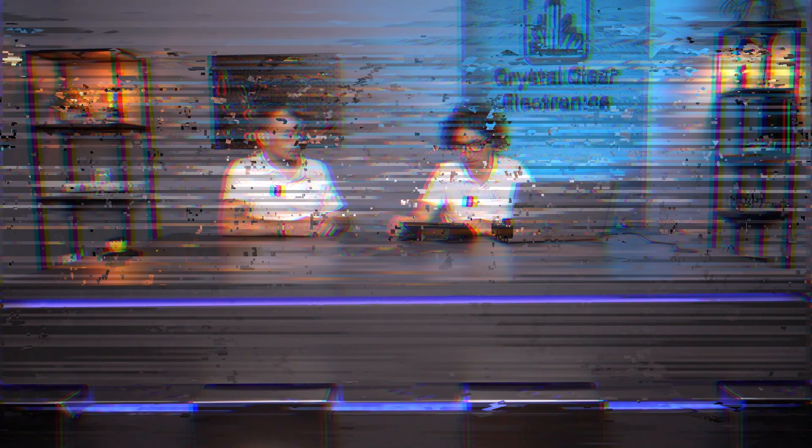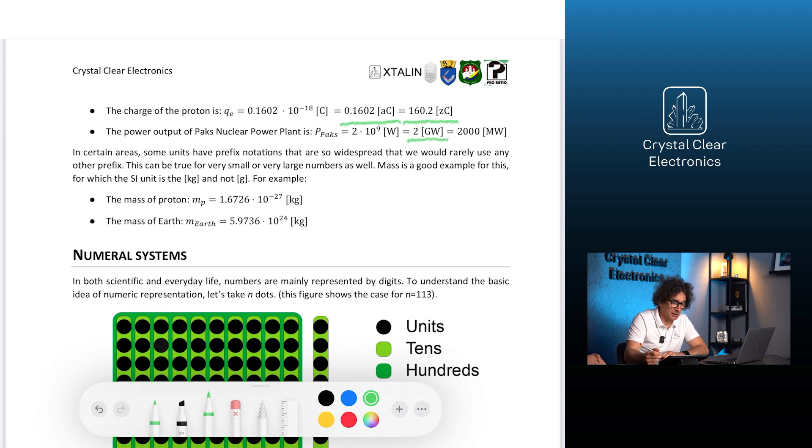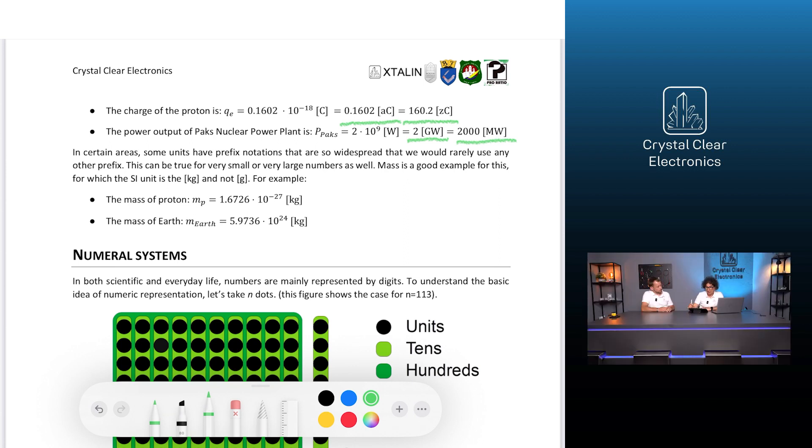Let's go! Of course, like the scientific notation, the prefix notation is not fixed. Let's see the previous quantities in prefix notation. The charge of the proton is Q sub E equals 160.2 zeptocoulombs, and that equals 0.1602 ectocoulombs. The power output of Pax nuclear power plant is P sub Pax equals 2 gigawatts which equals 2000 megawatts.